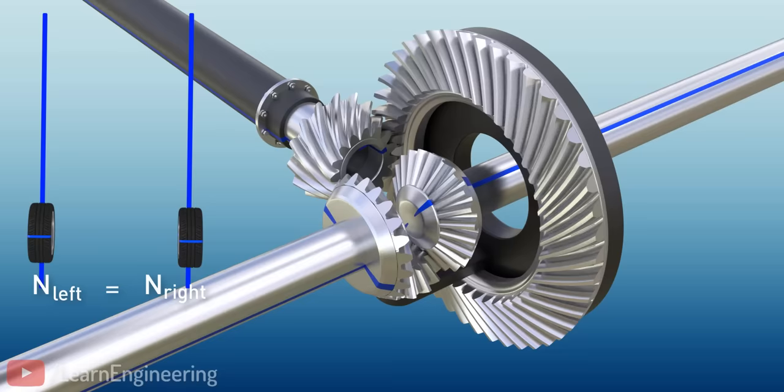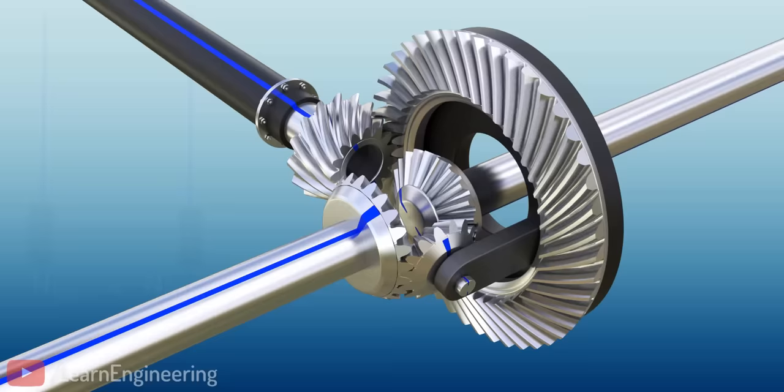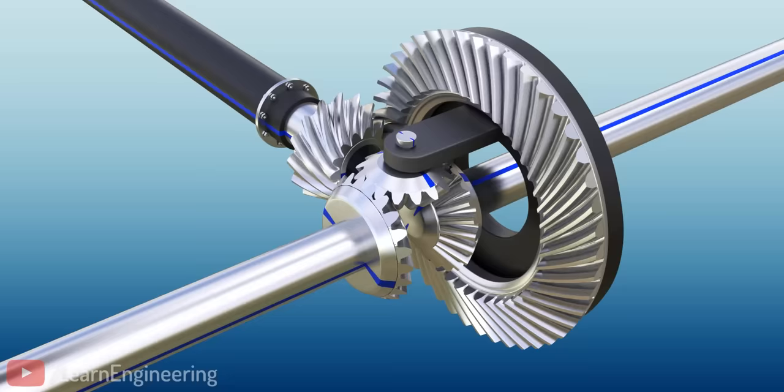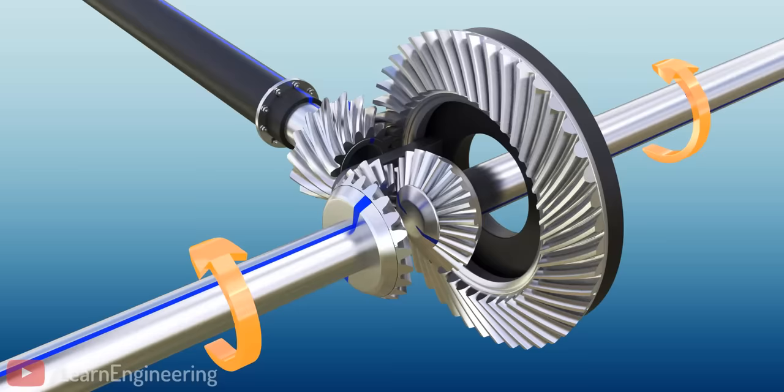When the vehicle moves straight, the spider gear rotates along with the ring gear, but it does not rotate on its own axis. The spider gear will push and make both side gears turn at the same speed. When the vehicle is moving straight, the spider side gear assembly will move as a single, solid unit.